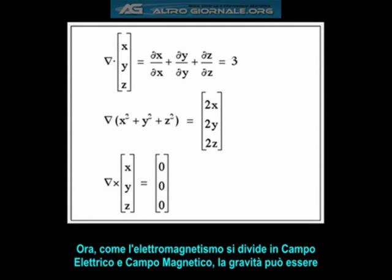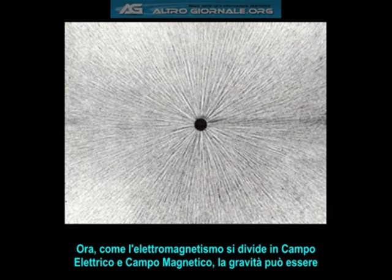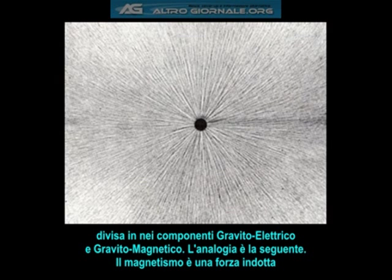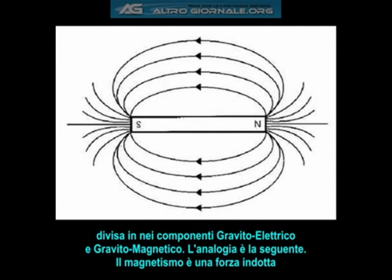Just as electromagnetism breaks down into the electric field and magnetic field components, gravity can be broken down into gravitoelectric and gravitomagnetic components. The analogy is as follows.